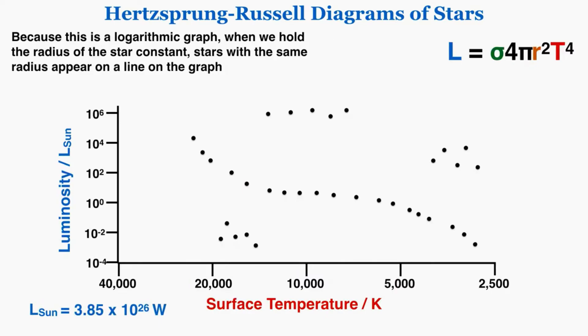Because this is a logarithmic graph, when we hold the radius of the star constant, stars with the same radius appear on a line on the graph.